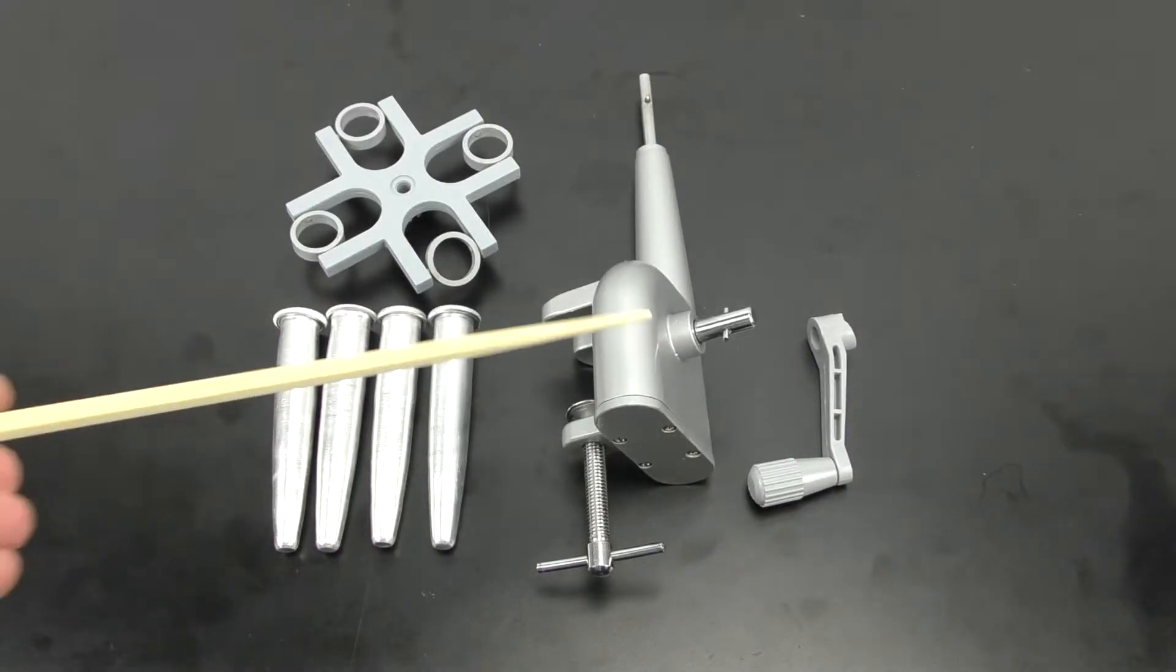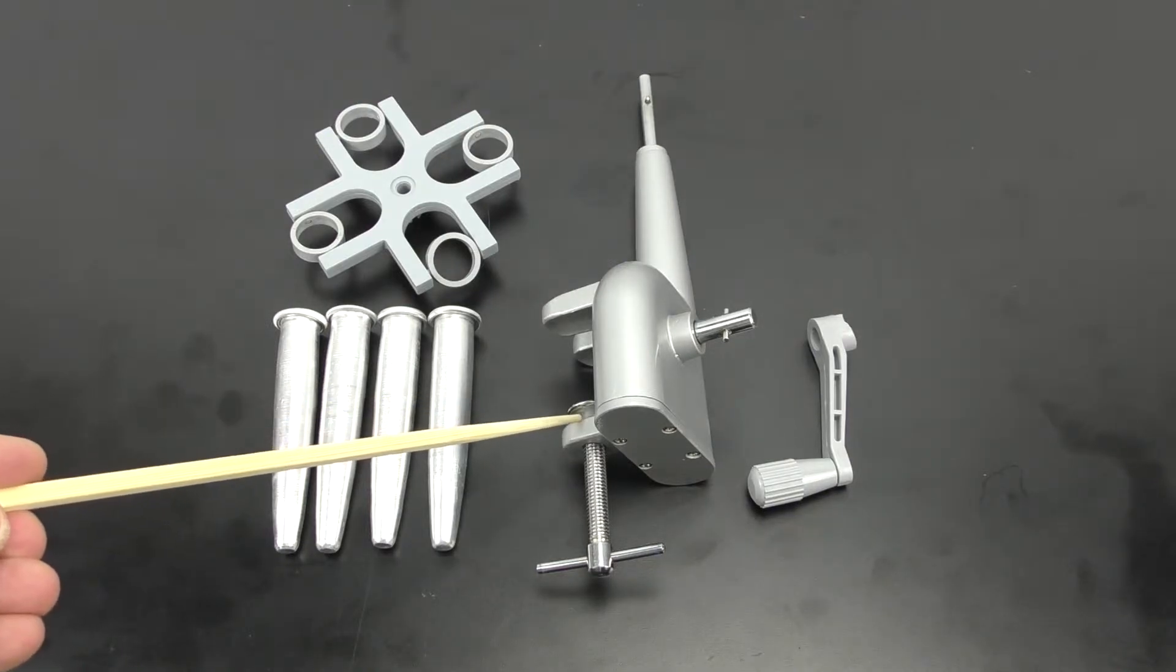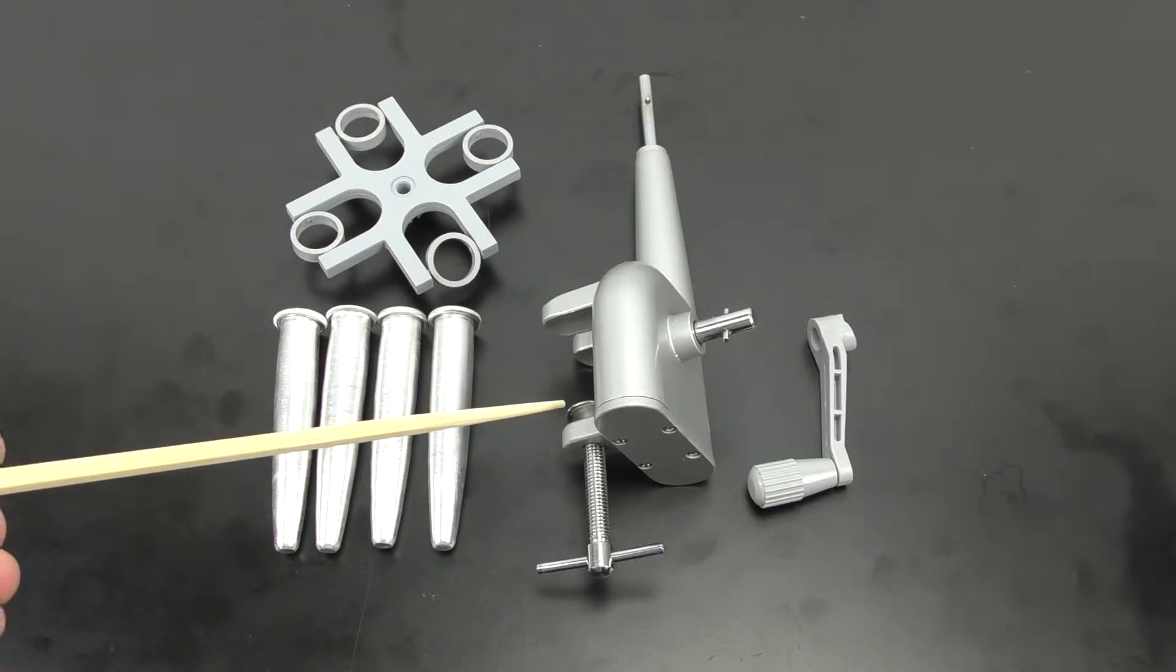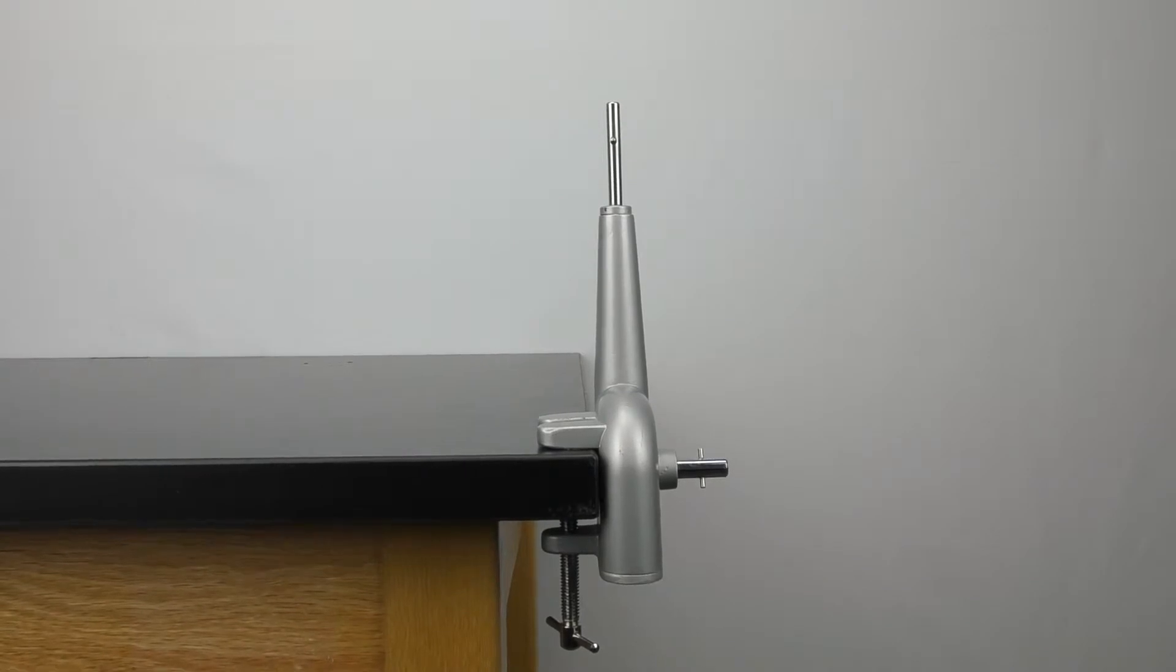The apparatus features a metal body, four aluminum shields to hold your tubes, and a built-in clamp that can fit edges up to 3.5 centimeters thick. The setup for the apparatus is very quick and straightforward.